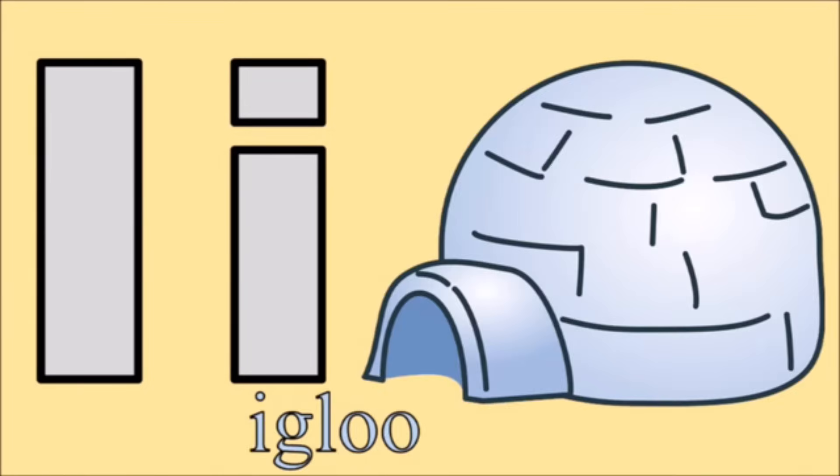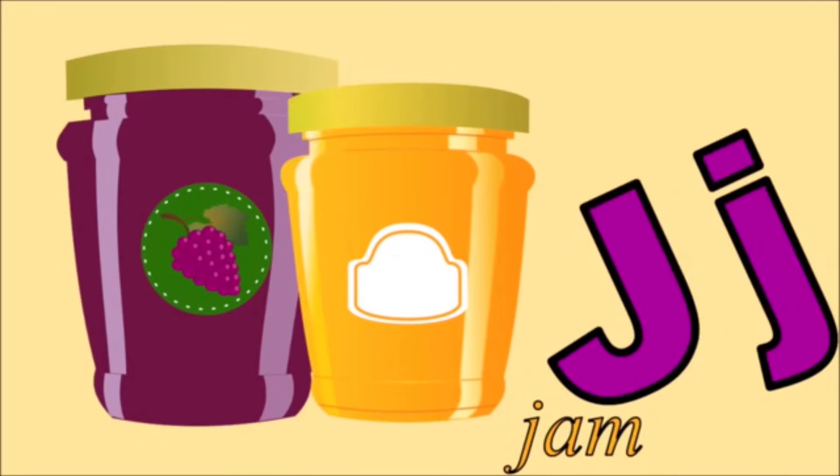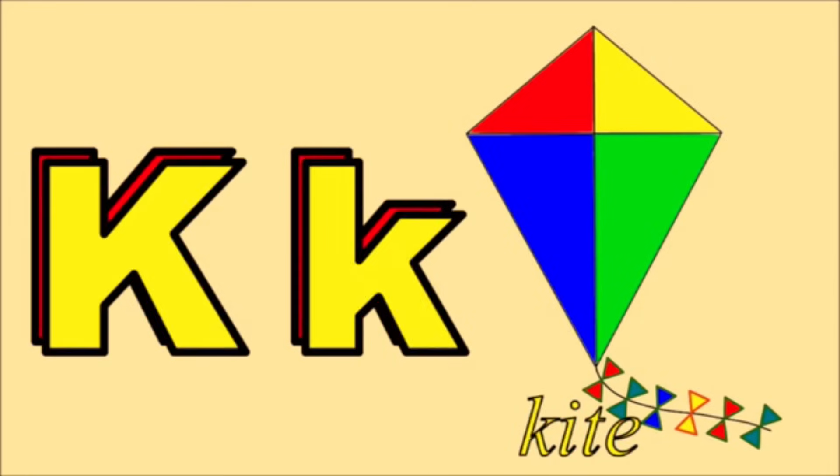I for eagle, e, e, e, e. J for jam, j, j, j. K for kite, k, k, k, k.